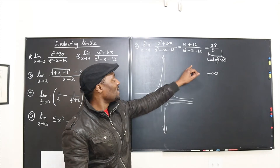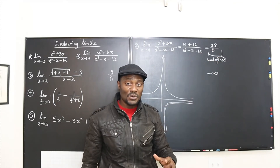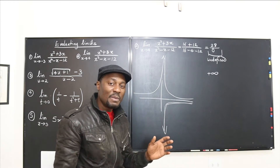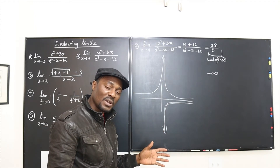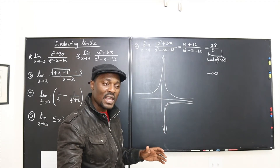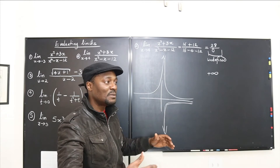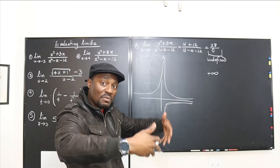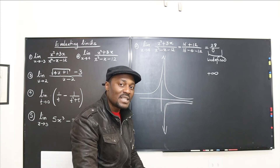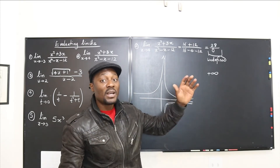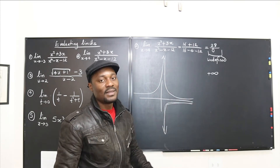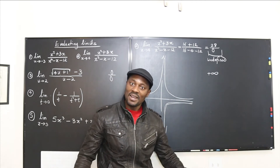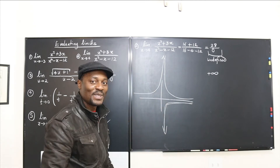So every time you get infinity from direct substitution, the next step is to investigate the limits just before and just after that point. If both point in the same direction — positive — then the limit is positive infinity. If both point down, it's negative infinity. But if one is positive and the other negative, the limit does not exist.